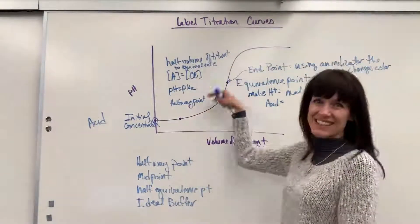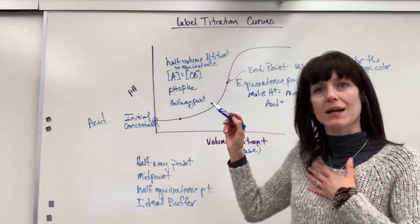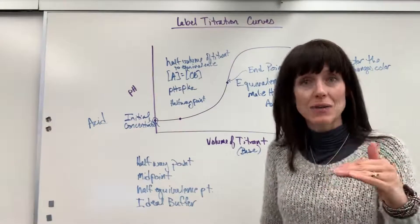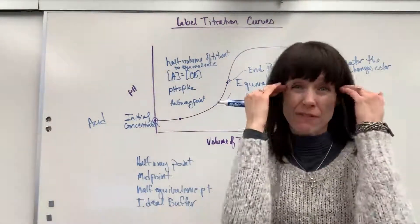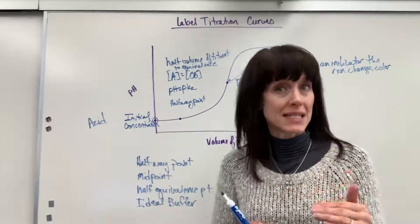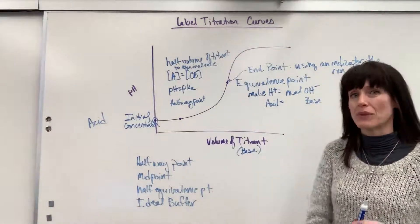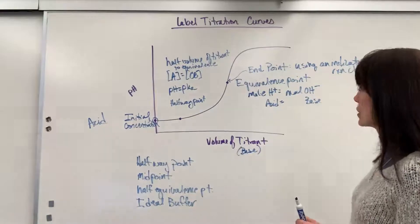It was this curve right here. That end point, so special in my heart, of phenolphthalein. The end point, when it turned pink, we hit the end point. It was the equivalence point. So the end point is where we actually visually see the color change. We see the color change. And what does that tell us? It tells us that we are at the equivalence point. So those are the very significant points on the titration curve.